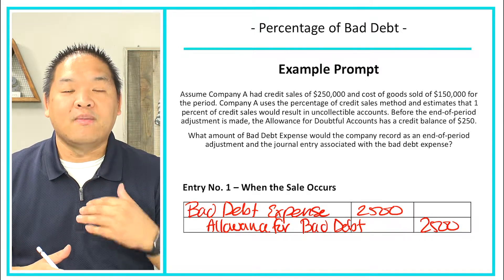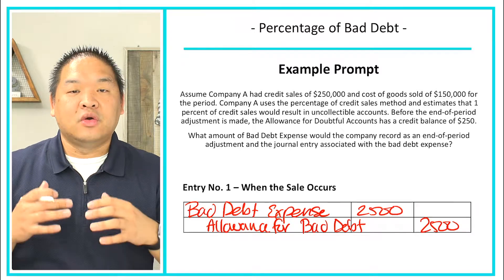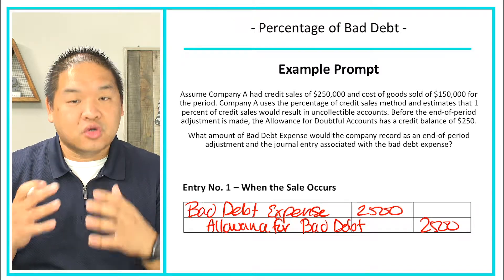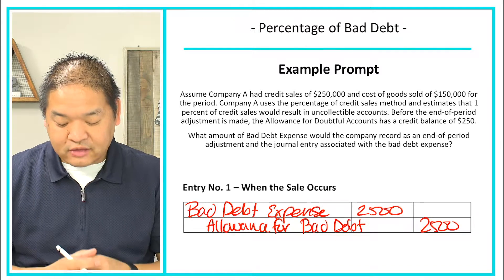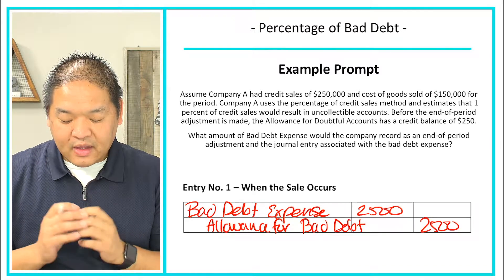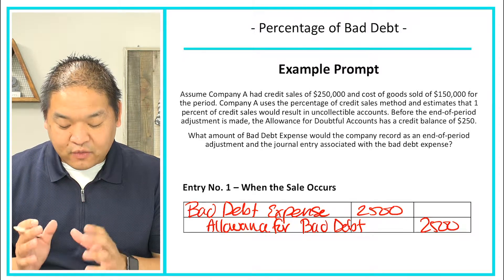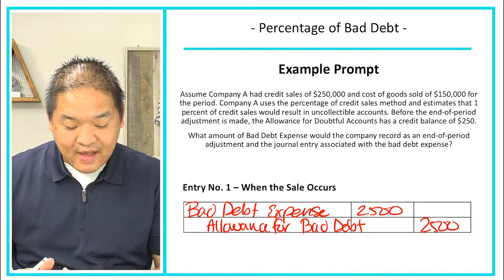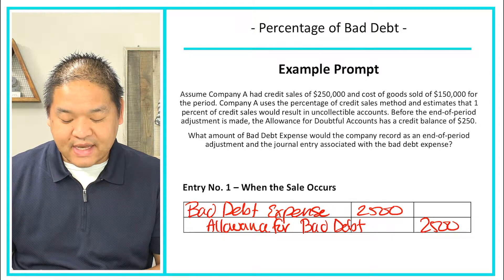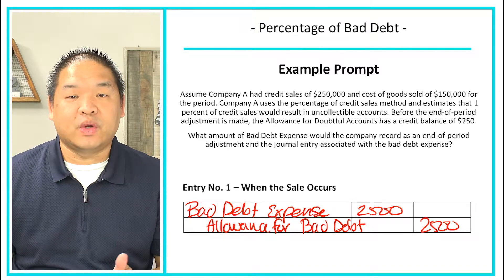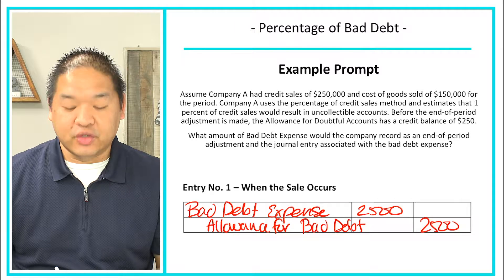We're putting money into the cookie jar, so we have to credit the account. We're going to credit the allowance for bad debt and debit bad debt expense for $2,500.